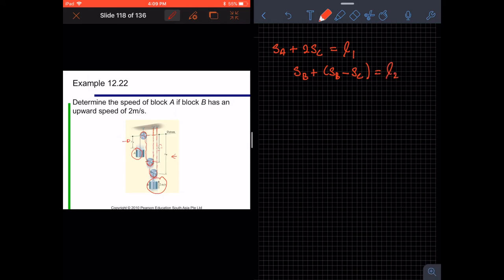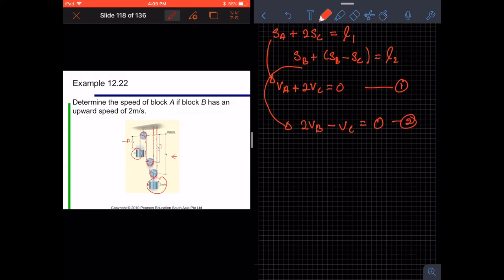So here when we take the time derivative, we are going to have VA plus 2VC equals 0. And here we have another one time derivative for SB. So we have 2VB minus VC equals 0. So now we have two systems of equation. This is 1 and this is 2. And here we can analyze VA and VB. So we need to eliminate VC.